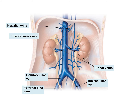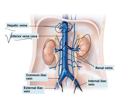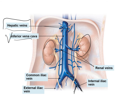In the abdominal cavity, the external and internal iliac veins come together forming the common iliac vein. The large blood vessel here is the inferior vena cava. It picks up blood from different organs: the renal veins bring blood back from the kidneys, and the hepatic veins bring blood from the liver. All of this drains into the inferior vena cava, which carries blood up to the heart.